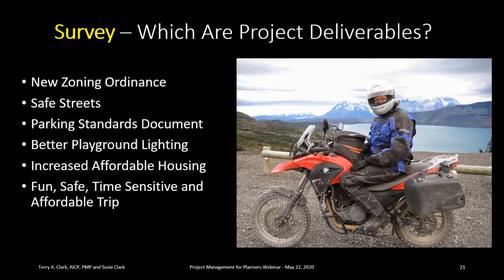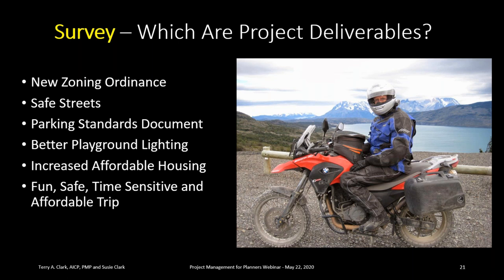Starting at the top: new zoning ordinance — well over three-quarters of you picked that, which is great. That is a final output — a deliverable with a beginning and end, and you know when you'll produce it. Safe streets is not a deliverable — you don't know when you have safe streets or how safe they are. Parking standards — yes, that's a deliverable. Better playground lighting — no, what's 'better' and when do you know you're done? Increased affordable housing — no, it's an outcome. Fun, safe, time-sensitive, and affordable trip — yes! That gets across the concept of deliverables.